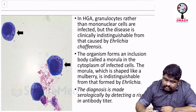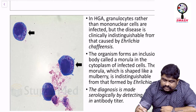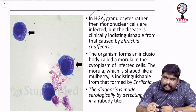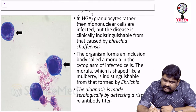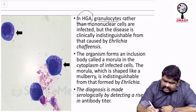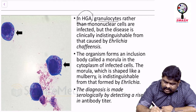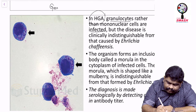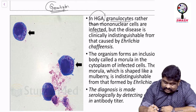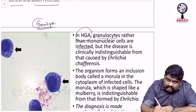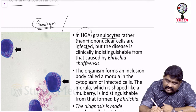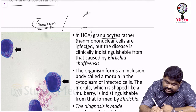Now look at Human Granulocytic Anaplasmosis (HGA). In anaplasmosis, granulocytes — rather than monocytes or mononuclear cells — are infected. We look at granulocytes, not monocytes.